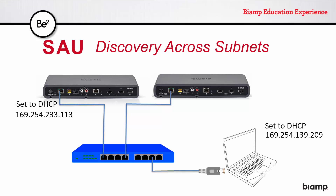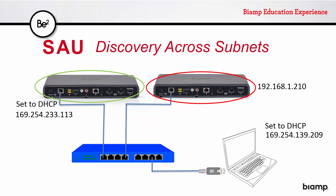Just as before, my computer and the device on the left are set to DHCP and communicating. This is the device showing as available in the SAU, and this new one is showing as grayed out. We know from the SAU that this device is at this IP address. The SAU cannot configure or actively monitor devices outside of its own subnet, but using its built-in MDNS capability, it can be aware of those devices.